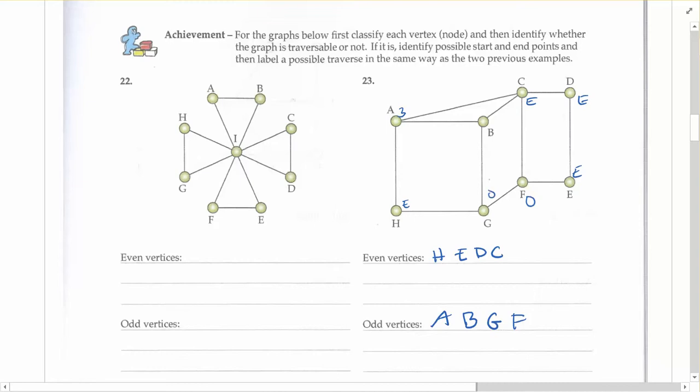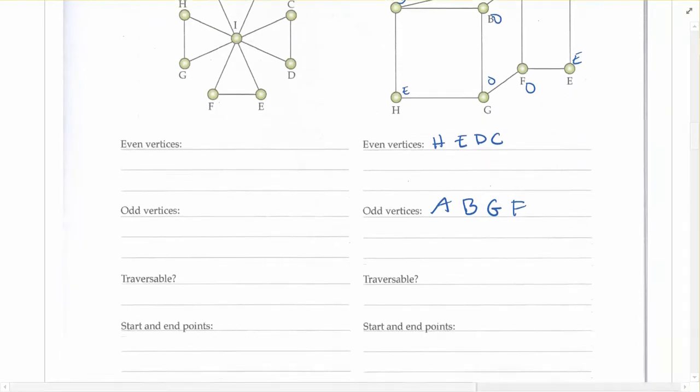So what we have in this situation is that it is not traversable because we can see that it's got more than two odd vertices. And again, it has to be exactly two odd vertices or none at all for it to be traversable. So there would be no start and end points.